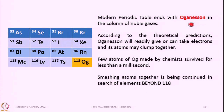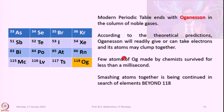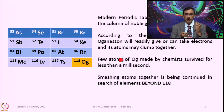The modern periodic table ends with Oganesson in the column of noble gases, next to radon. According to theoretical predictions, Oganesson will readily give or take electrons and its atoms may clump together. Only a few atoms of Oganesson made by chemists survived for less than a millisecond — that shows how difficult it is to work with and establish their properties. Smashing atoms together continues in the search for elements beyond 118.